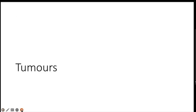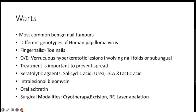Regarding tumors, the most common benign tumor in children is warts — HPV infection — leading to periungual and nail fold involvement. These appear as verrucous hyperkeratotic lesions, with fingernails most commonly affected. Treatment is important to prevent spread. Options include keratolytic agents such as salicylic acid creams, 20–40% urea, trichloroacetic acid, lactic acid, intralesional bleomycin for children over 12 years, and oral acitretin at 3–5 mg/kg body weight. Surgical modalities include cryotherapy, excision, radiofrequency, and laser ablation.